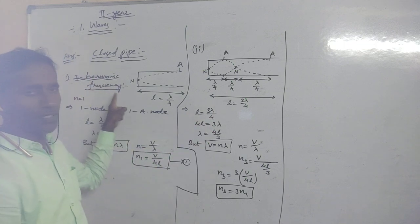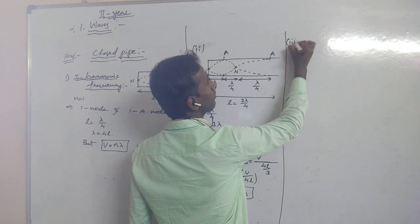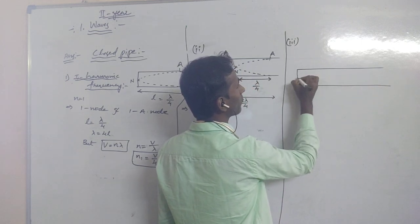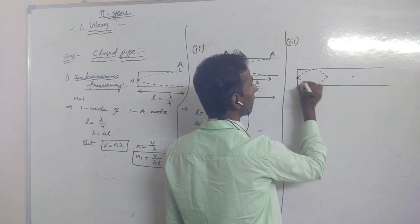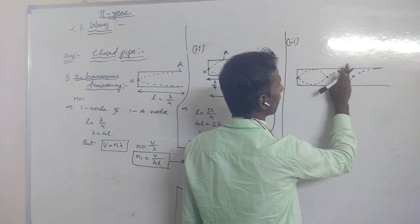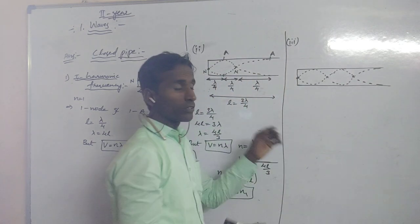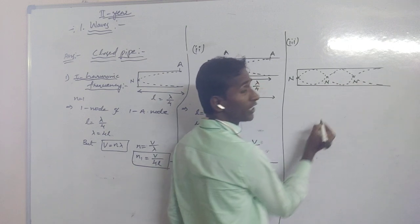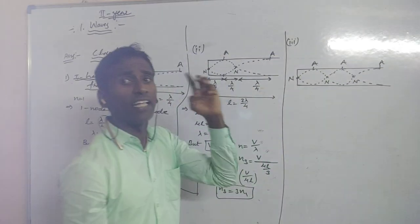The next one is the fifth harmonic frequency. In this frequency, drawing the diagram, we can see it forms 3 nodes and 3 anti-nodes.